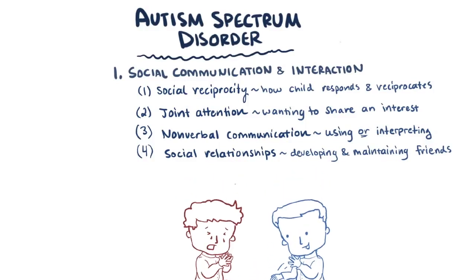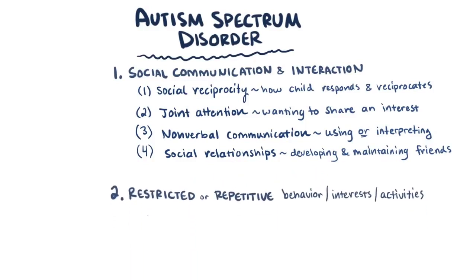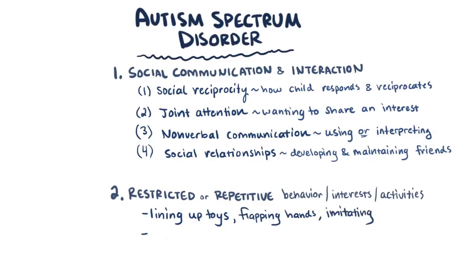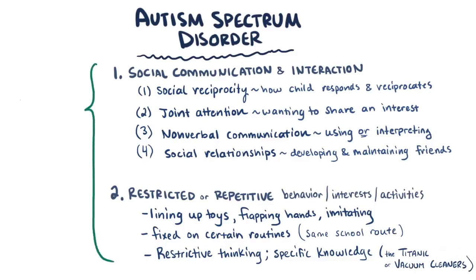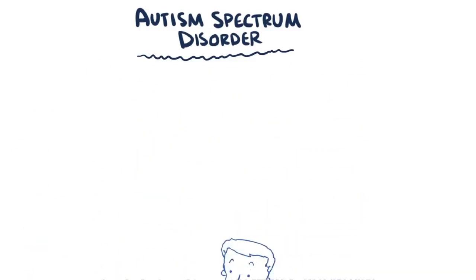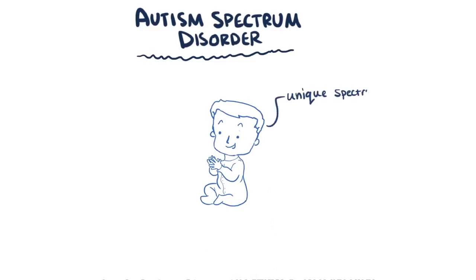The other major area is called restrictive and repetitive behavior. This category is pretty broad and can include a whole bunch of behaviors, some more well-known than others, like lining up toys in a ritualistic sort of way, flapping one's hands, or imitating words and phrases. The child might be fixed on certain routines, like taking the same route every day to school, or they might have restrictive patterns of interest, like having very specific and in-depth knowledge of the Titanic or vacuum cleaners. Children with ASD might exhibit one or more of these deficits and vary in how severe each deficit is.